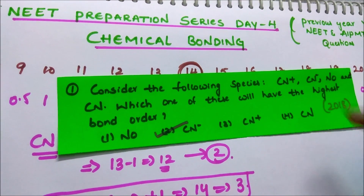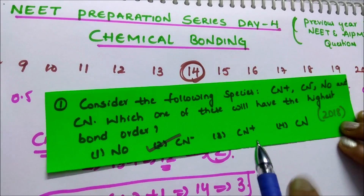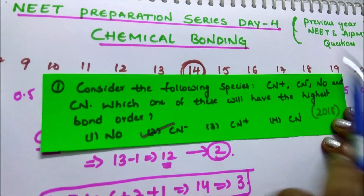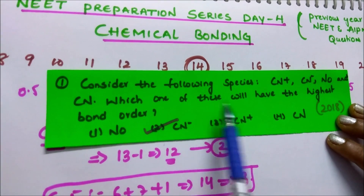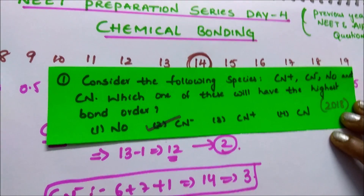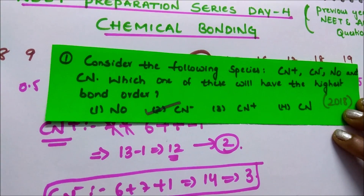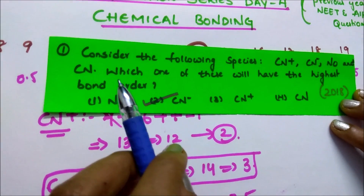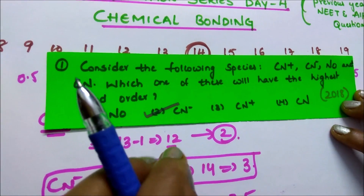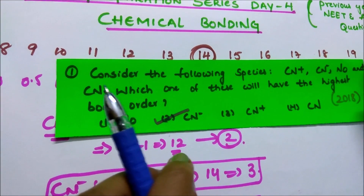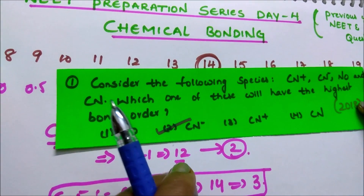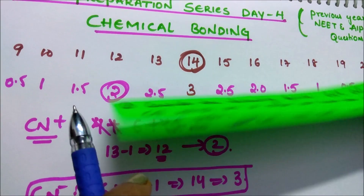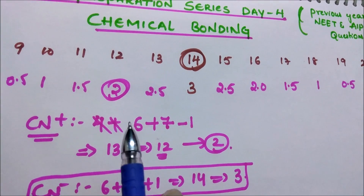See the first question: consider the following species CN+, CN-, NO and CN. Which one of these will have the highest bond order? You have to find the highest bond order. Normally you solve this using molecular orbital theory, but it takes time. I am going to discuss a trick so that you can solve this question easily.